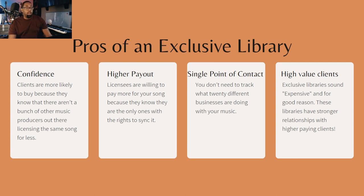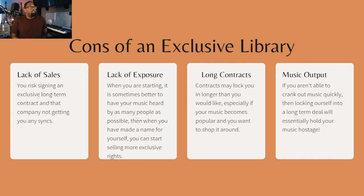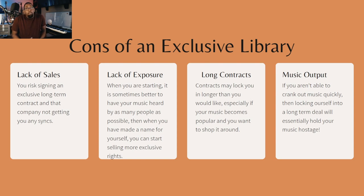Now let's look at the cons of an exclusive library. The first con is lack of sales. You risk signing an exclusive long-term contract and that company not getting you any syncs. You could sign 25 songs to an exclusive library and none of them get synced — now you're locked into a three-to-five-year deal with a company not landing any placements for your music.